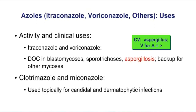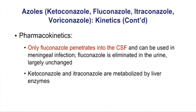Clotrimazole and miconazole are other antifungals available over the counter, used topically for candida or dermatophytic infections. For azole pharmacokinetics, focus on fluconazole — it's the only azole that can effectively penetrate into the CSF, which is why it's used for fungal meningitis. The drug is eliminated in the urine largely unchanged.